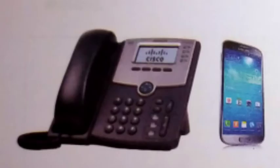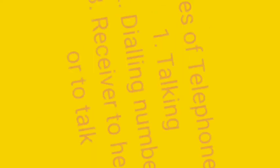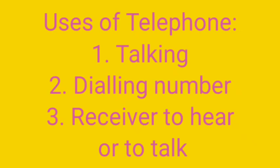We talk to people far away by using a telephone or a mobile phone. A mobile phone can be carried anywhere. Some uses of telephone: Number 1, we use the telephone for talking to a person far away. Number 2, we dial a number by telephone for talking. Number 3, a telephone has a receiver to hear and to talk.